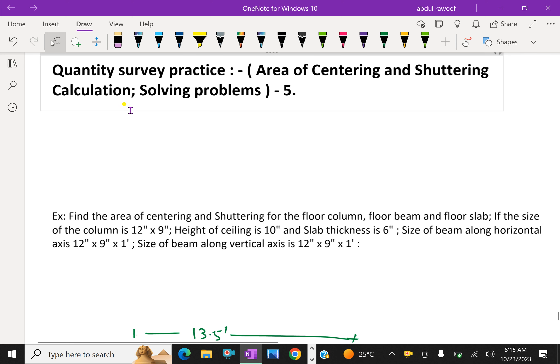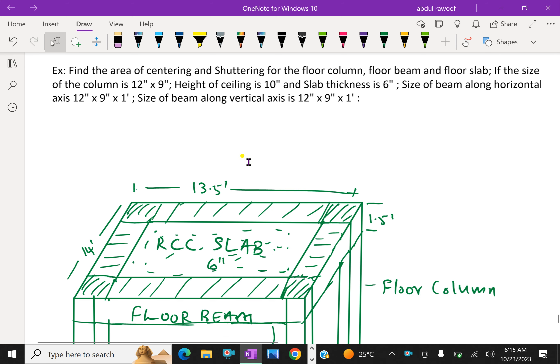Welcome to aminacademy.com. In quantity survey practice, let us do the area of centering and shuttering calculations for solving a problem. For this example, find the area of centering and shuttering for a floor column, floor beam, and floor slab. If the size of the column is 12 inch by 9 inch, the height of the ceiling is 10 feet, and the slab thickness is 6 inch. Size of the beam along the horizontal axis is 12 inch by 9 inch by 1 foot. Size of the beam along the vertical axis is 12 inch by 9 inch by 1 foot.